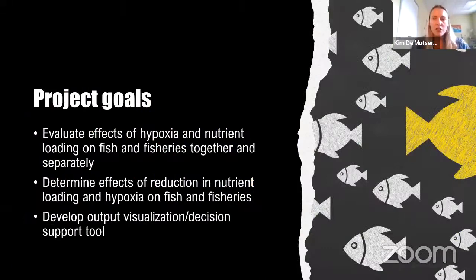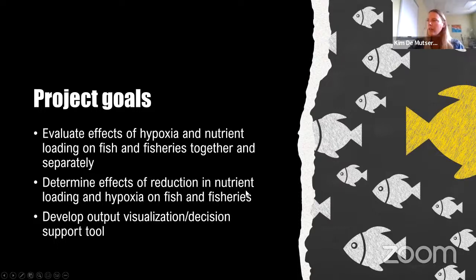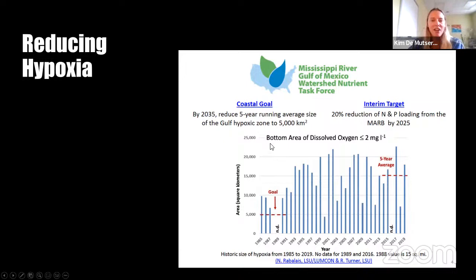For this project, we want to evaluate the effects of hypoxia and nutrient loading on fish and fisheries together and separately, then determine the effects of reductions in nutrient loading and hypoxia, and develop a decision support tool that can be used to look at what the effects are of different nutrient reduction scenarios on different species in the area.